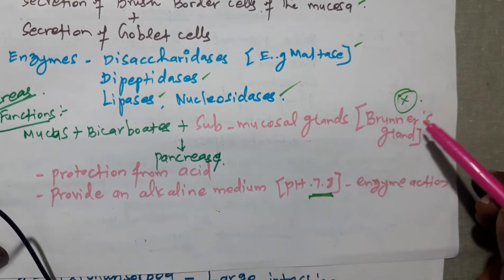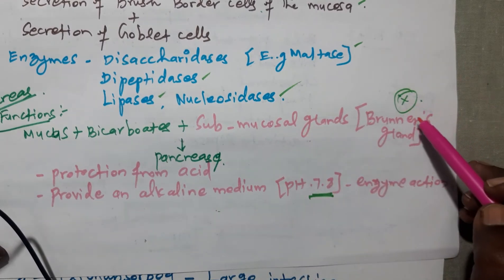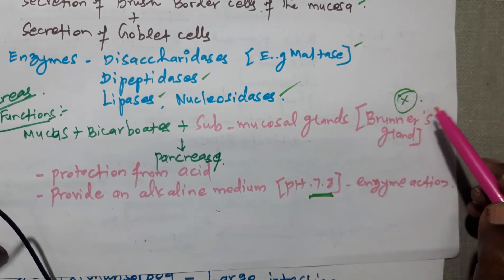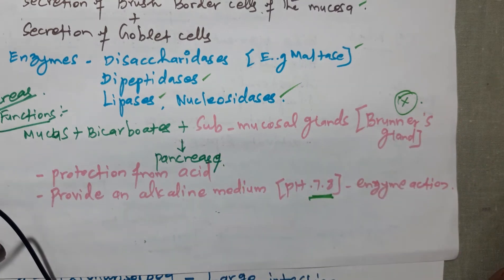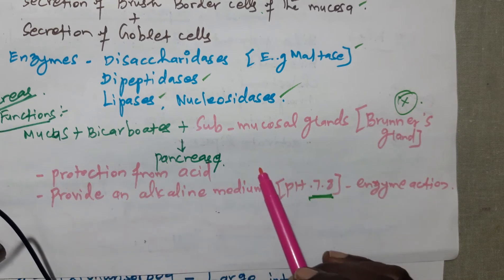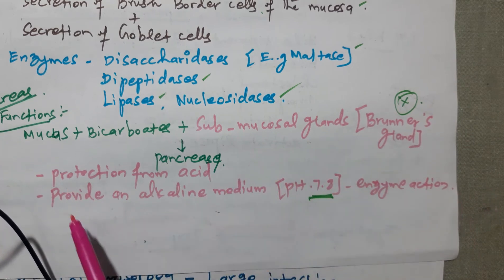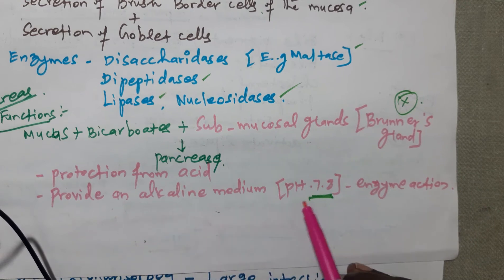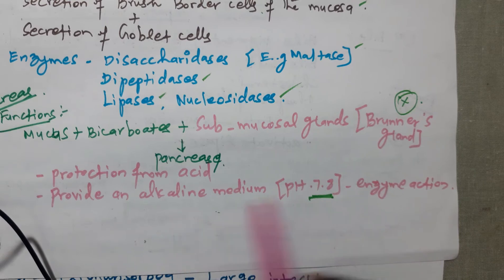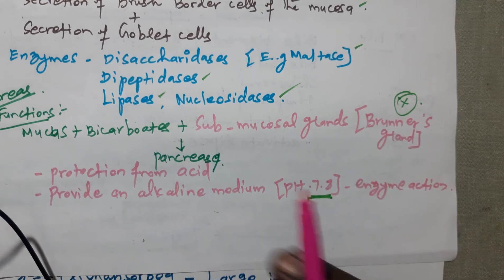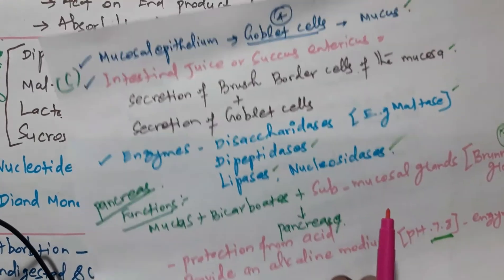Submucosal glands are otherwise called Brunner's glands, which are very important and are also secreted from the pancreas. These are present in the pancreatic juice and provide protection from acid such as HCl, and provide an alkaline medium at pH 7.8 for enzyme action.